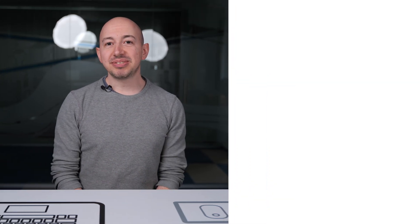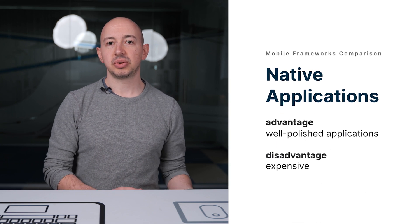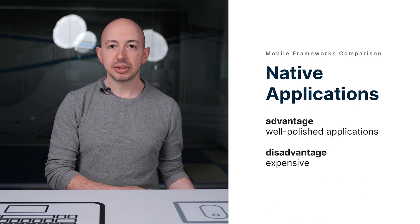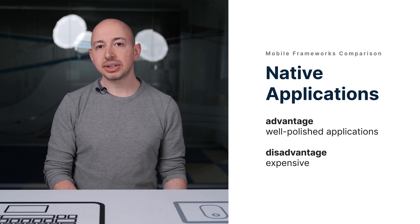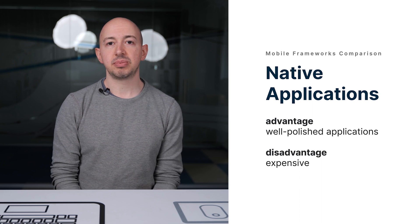Let's start with native applications. This is the most common way you could use in order to make mobile applications, and in general it means that you will be using the official tools of Google and Apple. The main advantage of this approach is that you have access to all the bells and whistles of Android and iOS, but it has the disadvantage of being very costly. Using native applications is a very safe bet and developers could implement very well polished applications that way.